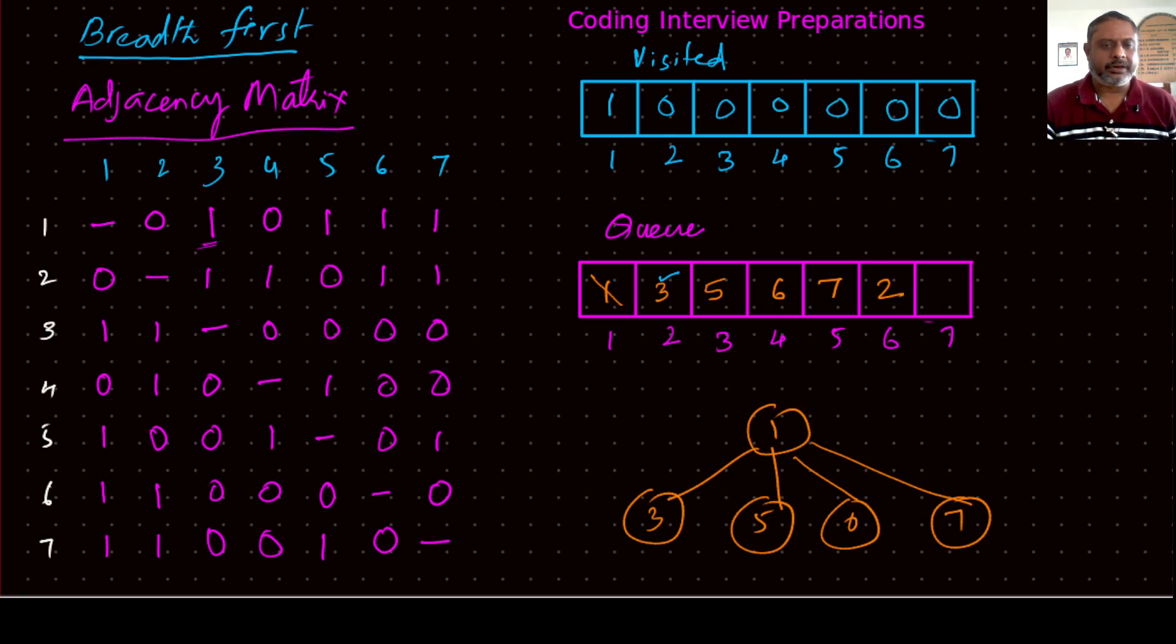So anything else to add from three? Nothing, so work of three is over. So dequeue three from the queue and declare that its work is over, so say three has been visited.